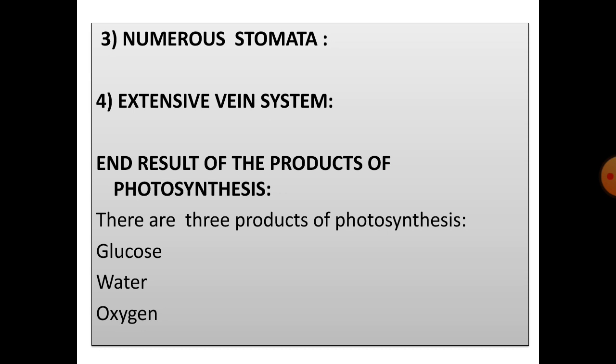End result of the product of photosynthesis. There are three products of photosynthesis: glucose, water, and oxygen. Whatever glucose gets produced is used in four different ways. Some are immediately used by plant cells, some are stored in the form of insoluble starch, some are converted into sucrose.